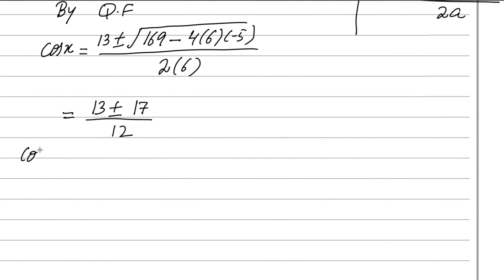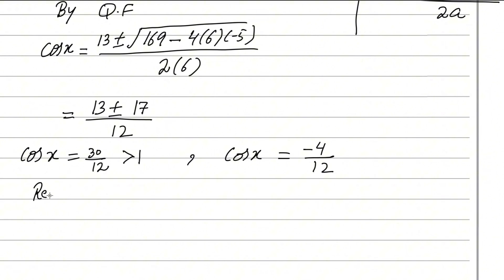We get two answers for cosine. The first is (13 + 17) / 12 = 30/12, which is greater than 1. Since the maximum value of cosine is 1, we reject this answer. The second is (13 − 17) / 12 = −4/12 = −1/3. This is the valid answer, so cosx = −1/3.